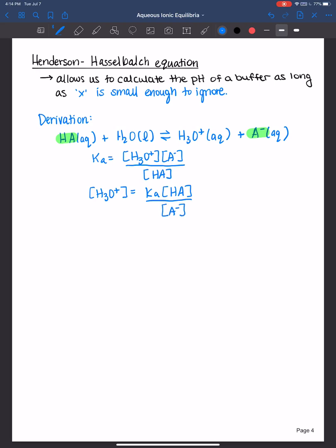Now I'm going to take the negative log of both sides and I'm going to continue to simplify here. Keep the negative log of the hydronium ion right here. I'm going to split these up. I'm going to make this the negative log of the Ka.